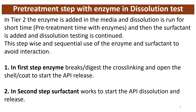In Tier 2 dissolution testing, the enzyme is added to the media and dissolution is run for a short time — around 10 to 20 minutes based on method development. This pre-treatment is done with the enzyme; the enzyme digests the gelatin and the gelatin shell opens. Then in the second step, the surfactant is added so that the dissolution can continue. This stepwise and sequential use of enzyme and surfactant is to avoid interaction between them.